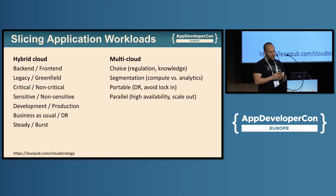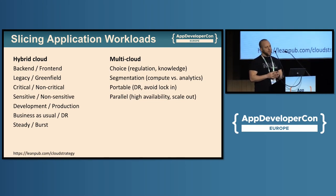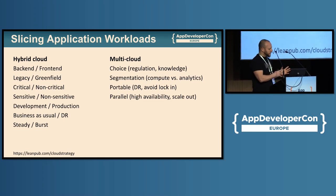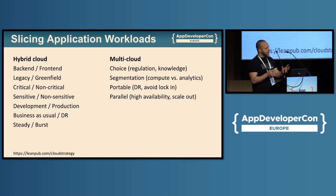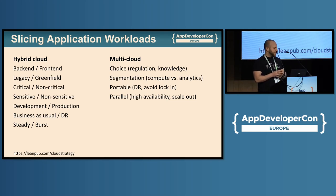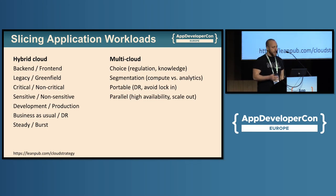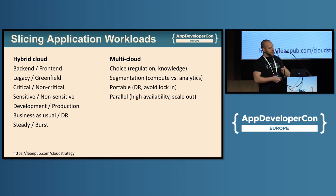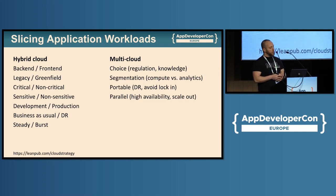There are different ways to split applications across clouds. If you have a hybrid cloud setup composed of your private data center and a public cloud, you might split your applications based on different tiers — the back-end on-prem and the front-end on the cloud — or slice them based on maintenance needs, having legacy on-prem and doing greenfield development on the cloud. It can also be based on criticality, data sensitivity, or operational concerns such as burstable vs. steady capacity, or business-as-usual vs. disaster recovery mode.